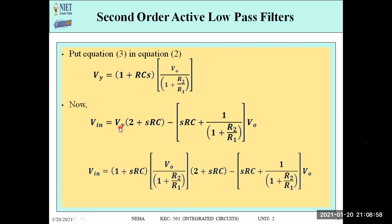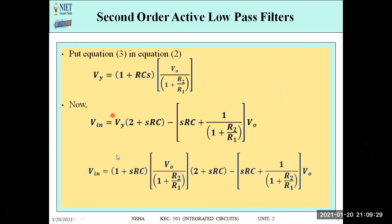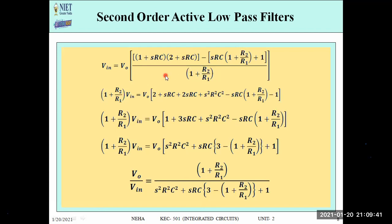Substituting this Vy expression into the combined equation, we have only output voltage V0 and input voltage Vin remaining. After multiplying out and collecting terms, we simplify: the 2RCS and RCS terms add to give 3RCS, and the S²R²C² term appears. Taking V0 as a common factor and multiplying through by (1 + R2/R1), we arrive at the transfer function V0/Vin = (1 + R2/R1) divided by the denominator expression in S.